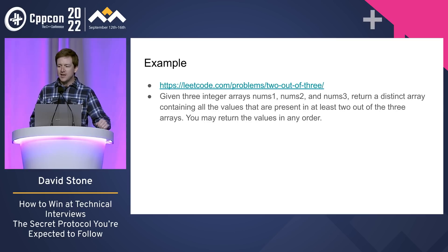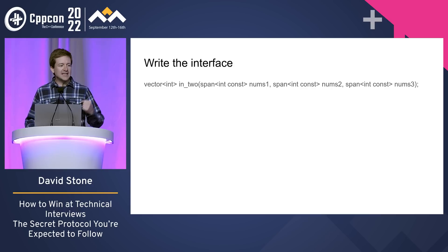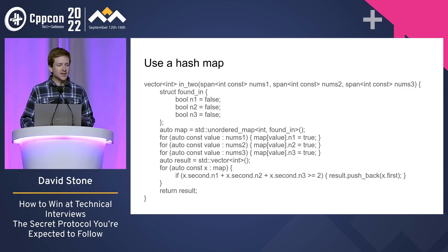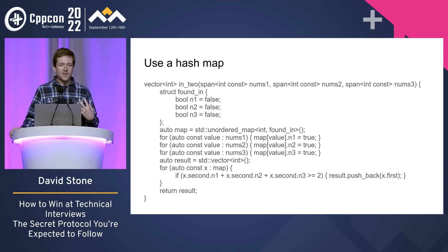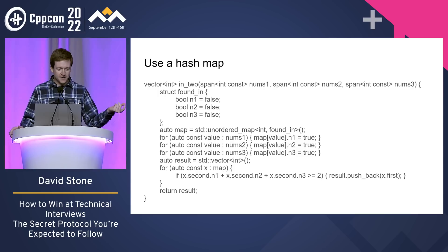Let's take another LeetCode problem at random. Given three integer arrays nums one, two, and three, return a distinct array containing all the values that are present in at least two out of the three arrays. You may return the values in any order. That last sentence is actually a hint telling you to use a hash map — it's called unordered map. We write the interface: we accept a span of three integer arrays and return a vector. The main thing we have to decide whenever we use a hash map is what the mapped type is going to be. In this case, the question is whether a value is in these arrays, so we have a struct with three bools in it. We iterate through each array and set the corresponding bool to true. At the end, we iterate over the whole map, and if at least two of the three bools are true, we add it to the result and return it.